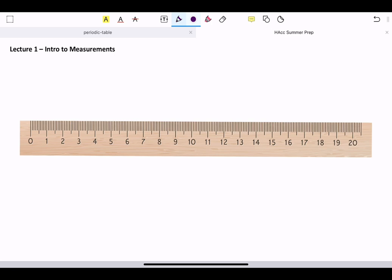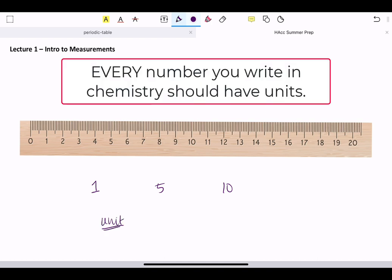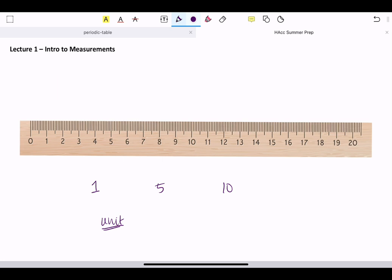First, we're going to talk about the concept of measurement. So here we have a ruler. And this ruler is essentially useless in that we've got all these numbers. We could say I have 1, or I have 5, or I have 10. But those numbers have no meaning without a unit attached to them, where the unit tells us what quantity we are measuring.